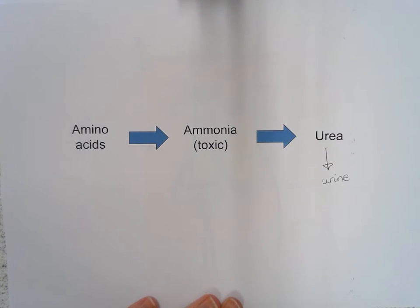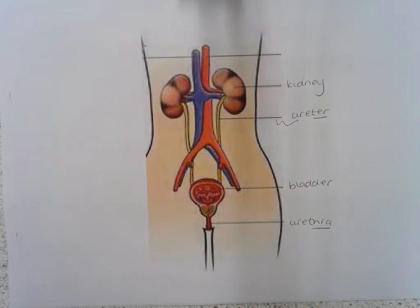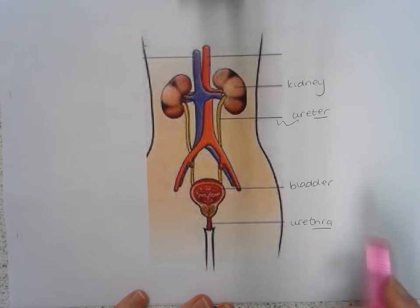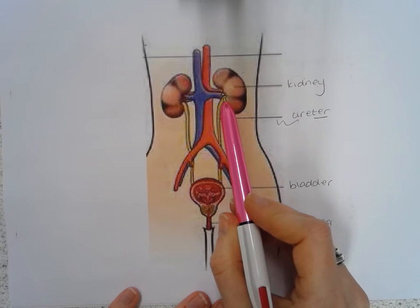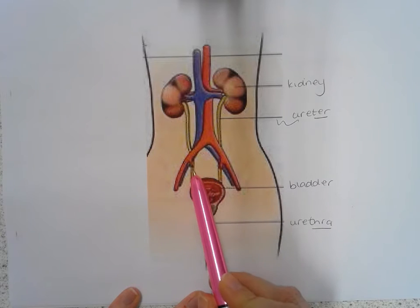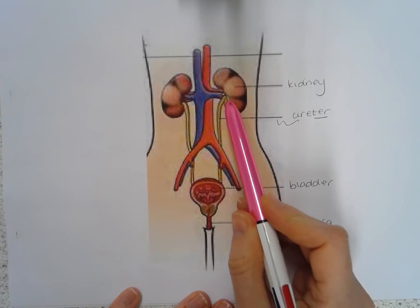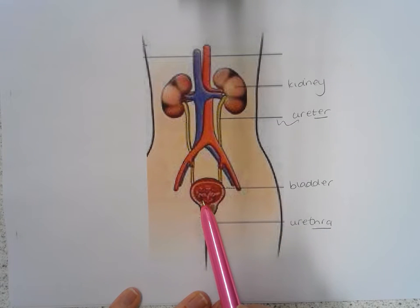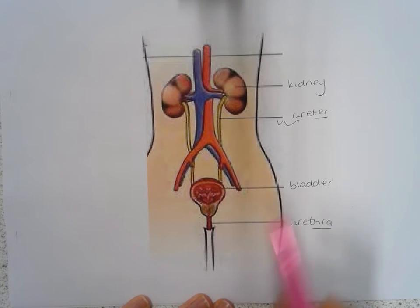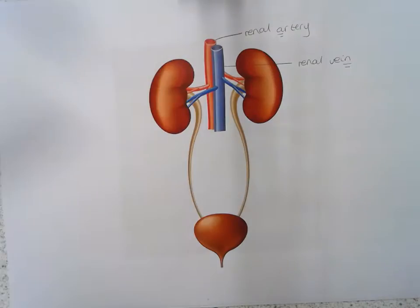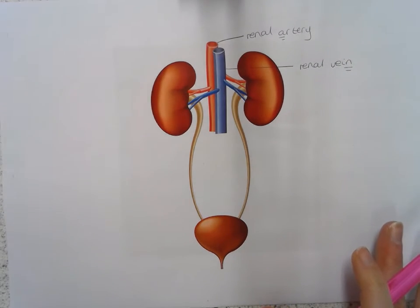The structures involved are collectively called the urinary system, which is made up of a few key parts. First, we have the kidneys, which we'll discuss in detail shortly. Each kidney is attached to a tube called a ureter — the two ureters travel down to the bladder, transferring urine from the kidneys. The bladder stores urine until it's ready to be excreted out through the urethra. Be careful not to mix up ureter and urethra.